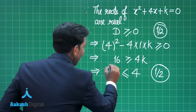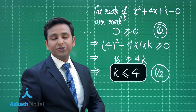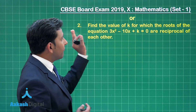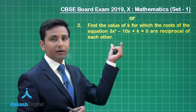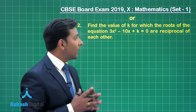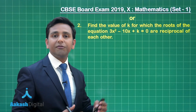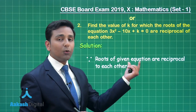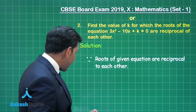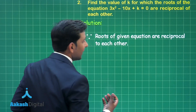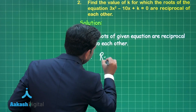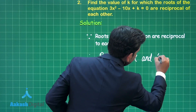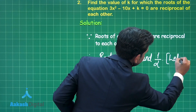Now the next question states: find the value of k for which the roots of the equation 3x² - 10x + k = 0 are reciprocals of each other. Again this is from quadratic equations. Since the roots are reciprocal to each other, we consider the roots to be α and 1/α.